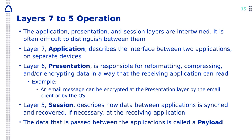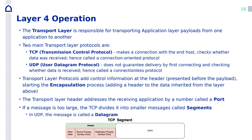Now we are on slide 15 — this is the function of each layer of the OSI model. Layer 7, application: interface between two applications on separate devices. Presentation: reformatting and compression — file formats like MPEG or JPG. Session layer: how data between applications is synced and recovered. The data at this stage is called payload.